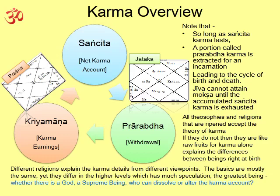Let us take a look at the karma overview. You can see on top a blue circle as the net karma account — I call it Sanchita Karma. From this blue circle there is a blue arrow where you can see a chart called the Jataka. This is my chart, and this Jataka was created by withdrawing a certain amount. The withdrawn amount will have some good karmas and some bad karmas, attaching to all the grahas. All grahas will have good karma and bad karma associated with one color, one vibration — one khata, as we call it.